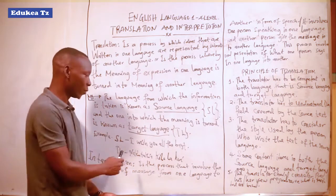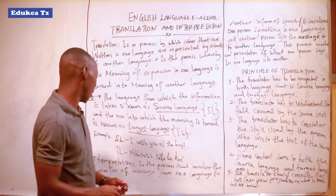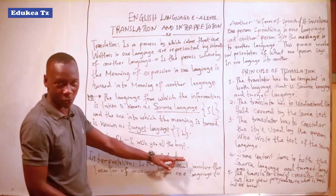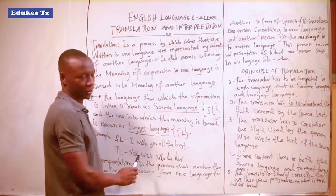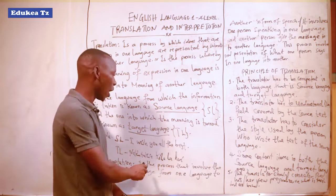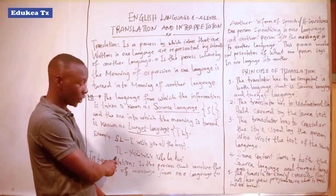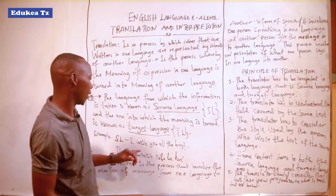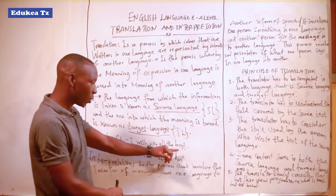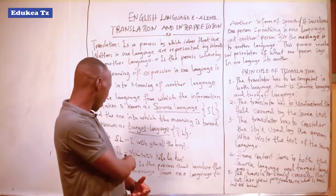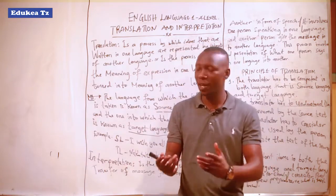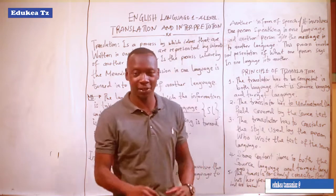Let us use a simple example to become familiar. The source language is English, and the target language here I have used Swahili. The English phrase is: 'I wish you all the best with the exams.' The Swahili target language version is: 'Nakutakia kila la heri.' So 'I wish you all the best' is English — the source language — and 'Nakutakia kila la heri' is Kiswahili, which is the target language.